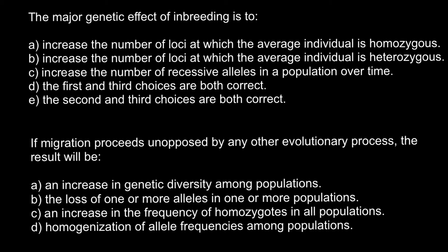The major genetic effect of inbreeding is: Answer A — increase the number of loci at which the average individual is homozygous. Answer B — increase the number of loci at which the average individual is heterozygous. Answer C — increase the number of recessive alleles in populations over time. Answer D — the first and third choices are both correct. Answer E — the second and third choices are both correct. The correct answer would be A.